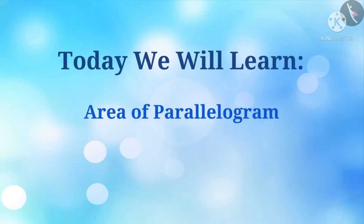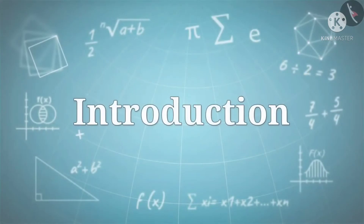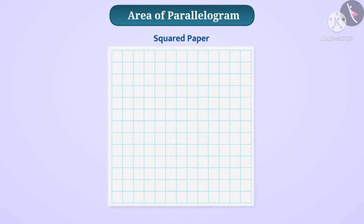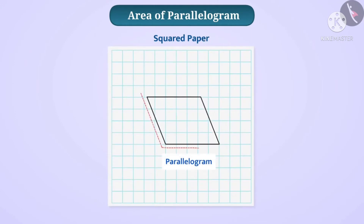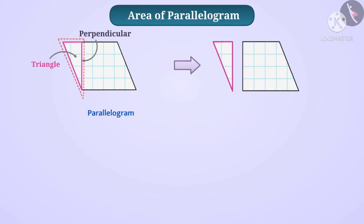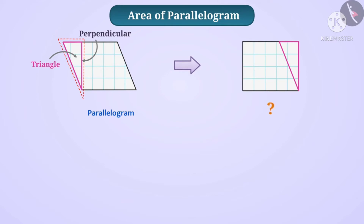Now, we are going to see the area of the parallelogram. So, we have to take one graph sheet paper, draw a parallelogram on a graph sheet, and cut it. Draw a perpendicular line from one vertex to the opposite side. Now, we will see one triangle. Cut the triangle and shift the triangle to the other side of the parallelogram. What shape is seen now?